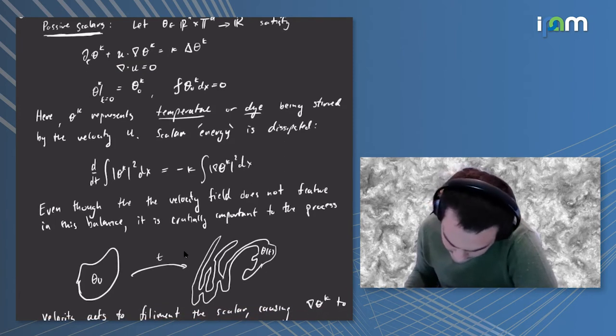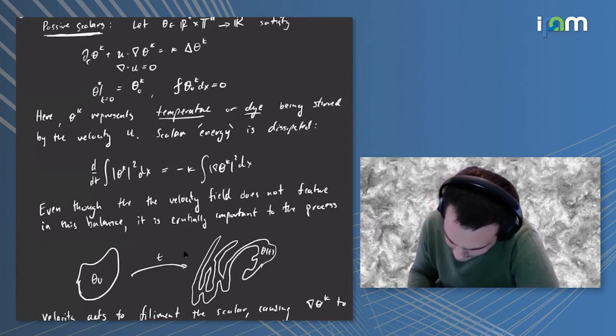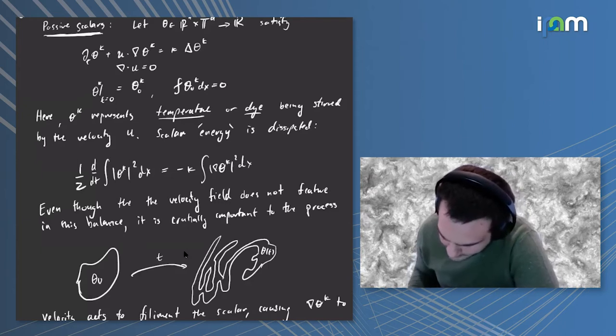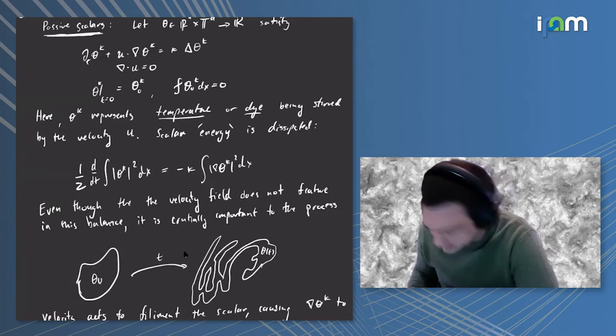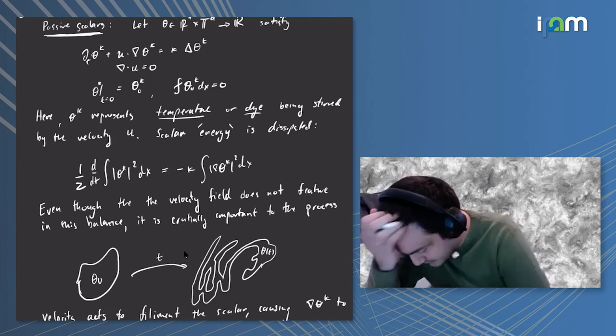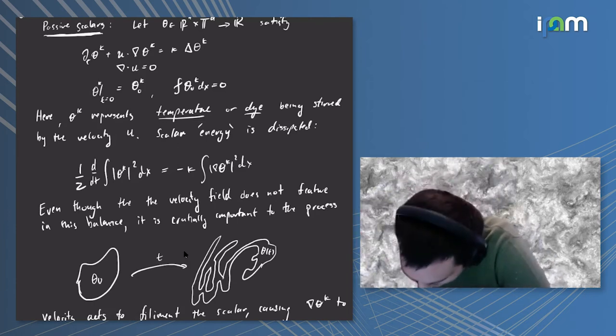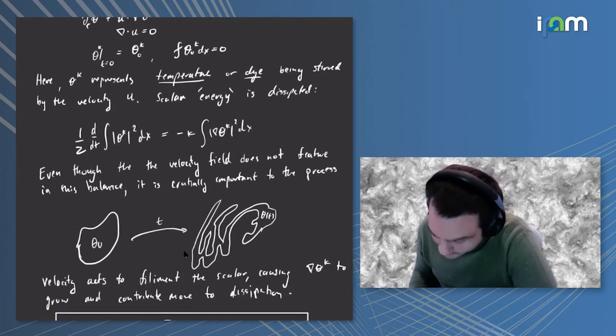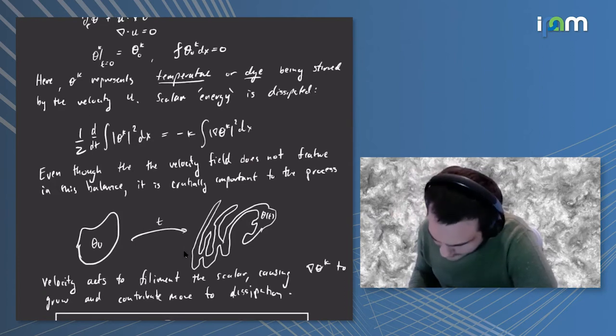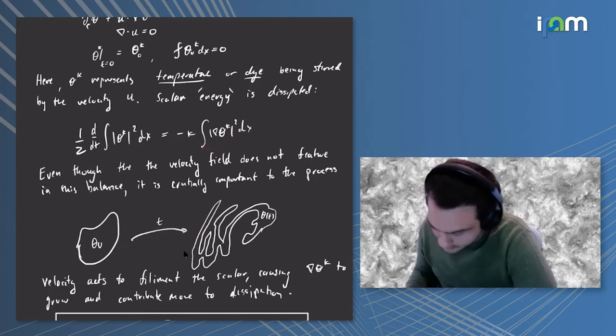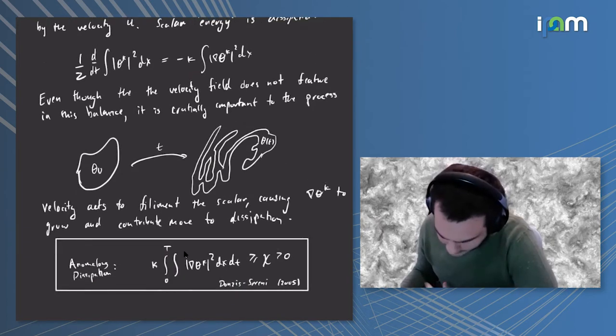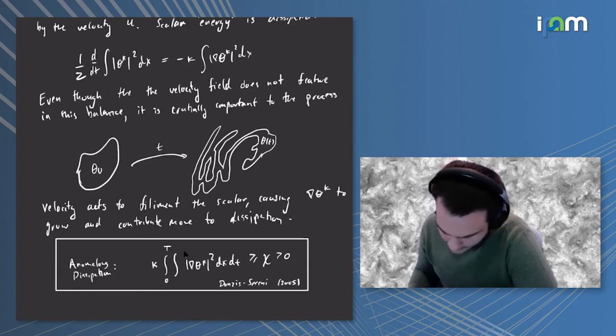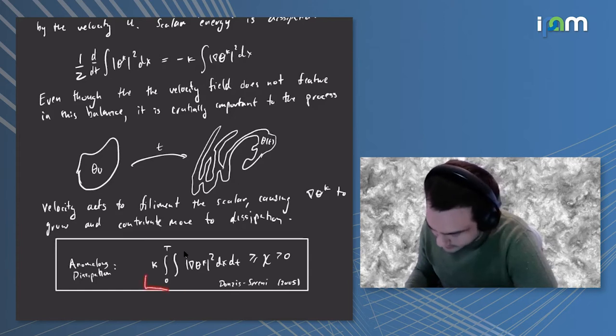A direct calculation shows that the rate of change of scalar energy is dissipated by the thermal diffusivity with the gradients of the scalar. Although the velocity doesn't play a direct role in this balance, it has a lot to do with how effectively the scalar dissipates its energy. In particular, the velocity can give rise dynamically to very small scale structures, making the laplacian strong and the dissipation term more powerful.